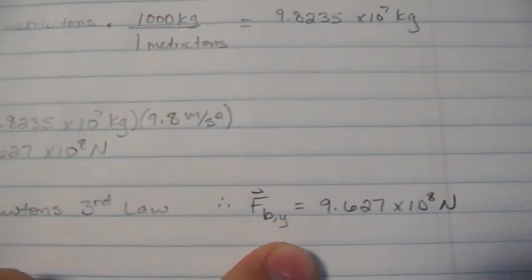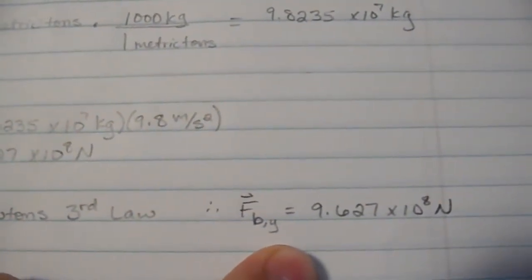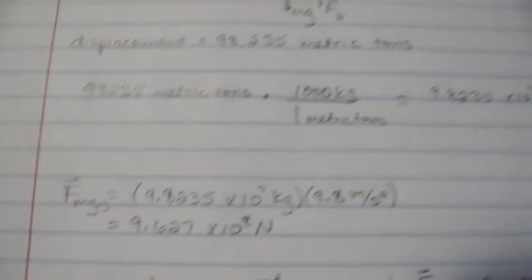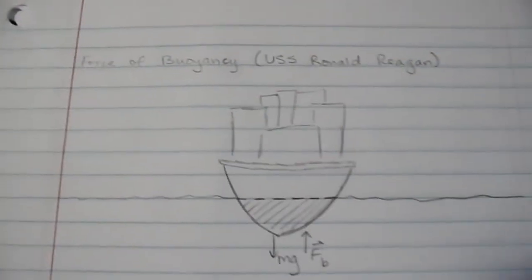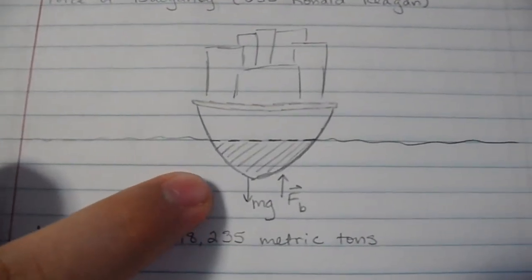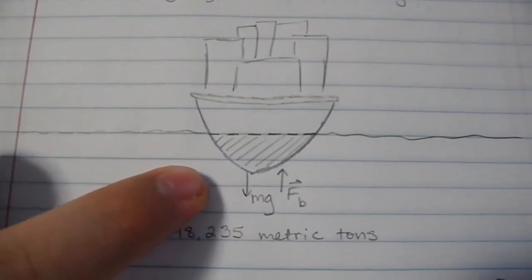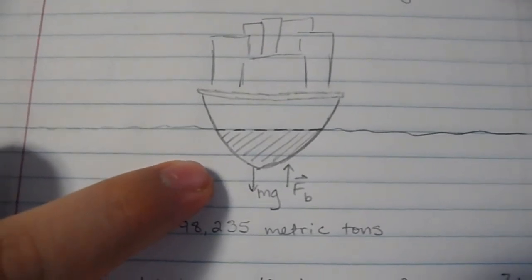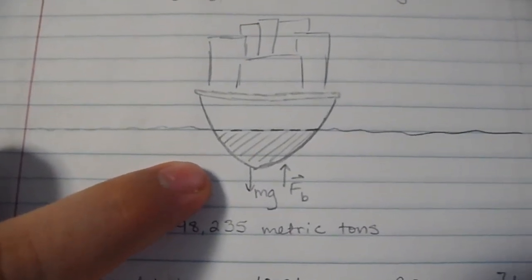The force of buoyancy would be 9.627 times 10 to the 8th newtons, just as the force of gravity is, which is why we have zero acceleration in the y direction—the ship is just floating in the water.